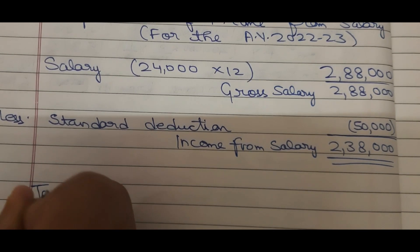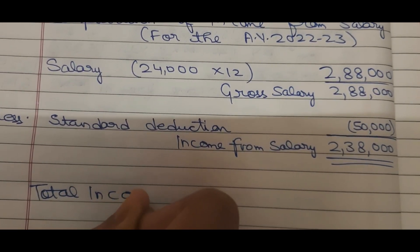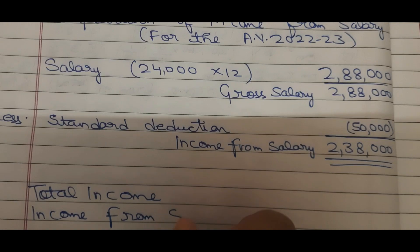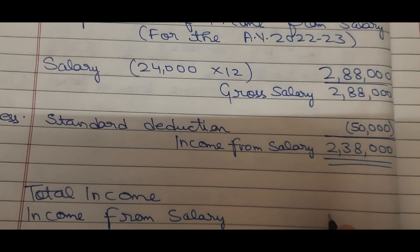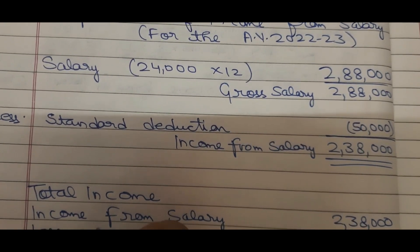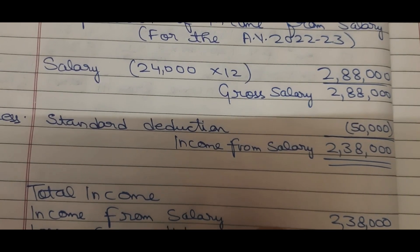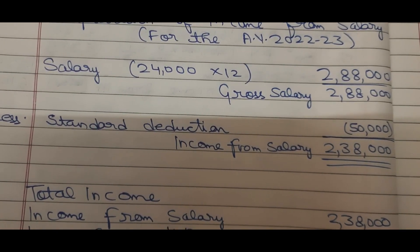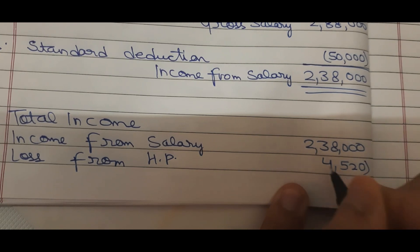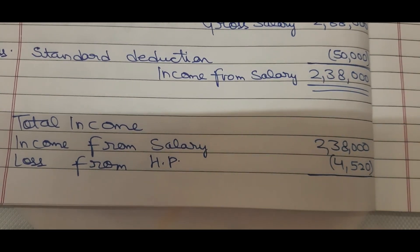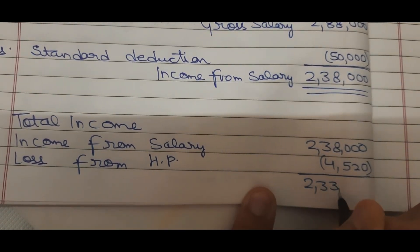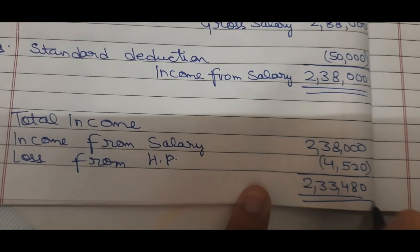Now we calculate total income. Income from salary is Rs. 2,38,000 and loss from house property is Rs. 4,520. Total income = Rs. 2,38,000 − Rs. 4,520 = Rs. 2,33,480.